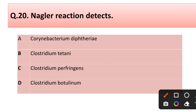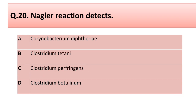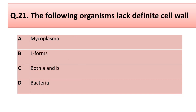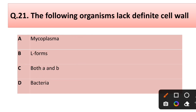Question number twenty: the Nagler reaction detects — options: (a) Corynebacterium diphtheriae, (b) Clostridium tetani, (c) Clostridium perfringens, (d) Clostridium botulinum. Correct answer is option C: Clostridium perfringens. Question number twenty-one: the following organisms lack a defined cell wall — options: (a) Mycoplasma, (b) L-forms...